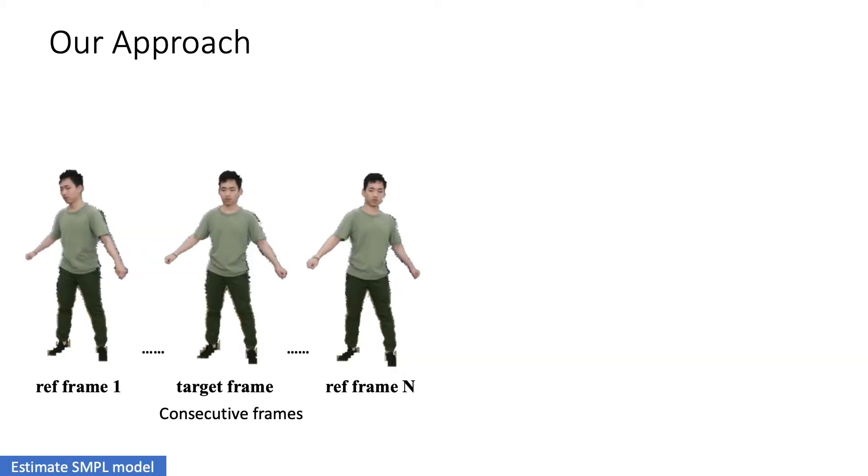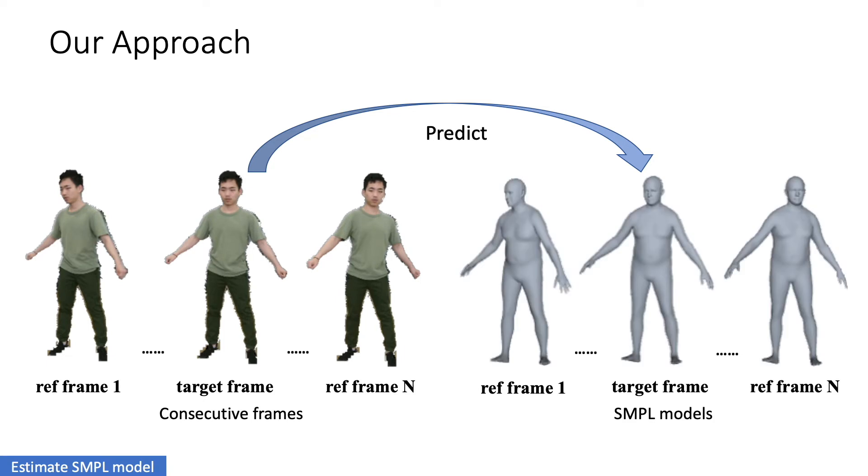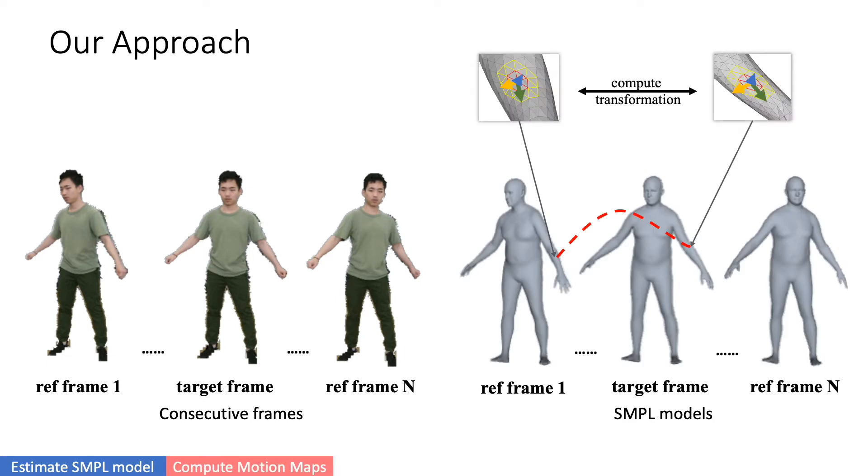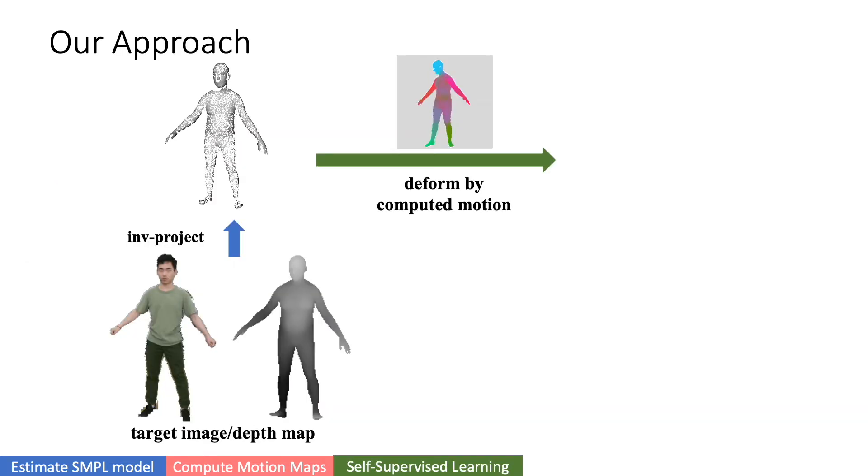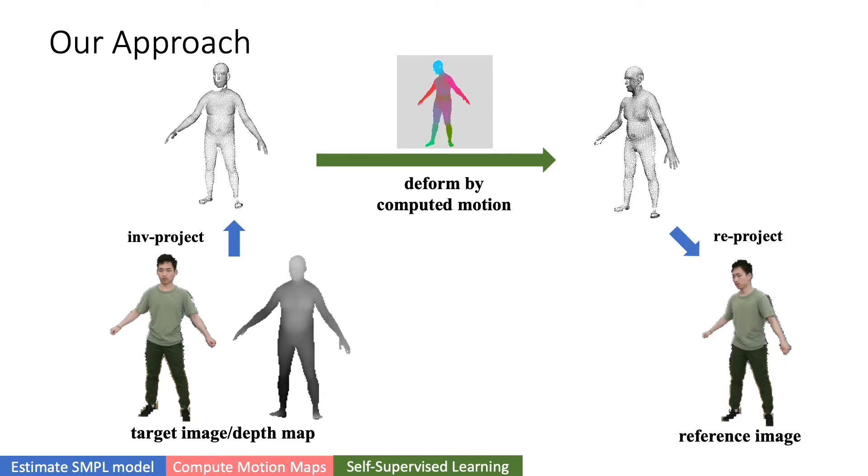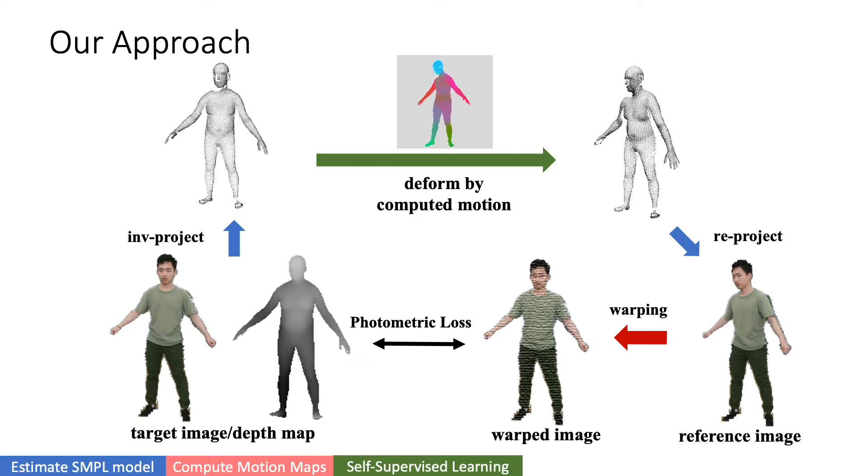We first estimate SMPL models for each frame in a short video clip. Then, a dense non-rigid motion map can be computed between neighboring frames. With the motion map, the reference frame can be morphed to the target frame. A photometric loss can be enforced to optimize the depth.